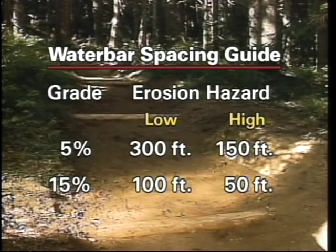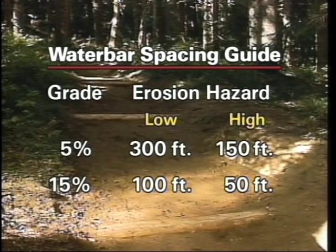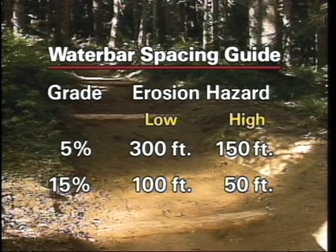This water bar spacing guide was developed for areas with both fine and coarse-grained granite soils. For example, if the trail gradient is 5%, the water bar spacing in a low erosion area should be 300 feet; in a high erosion area, 150 feet. At 15%, this changes to 100 feet or 50 feet depending on the erosion factor. Once you've determined where to place a water bar, move on to installation. The two major materials used are logs and rocks.